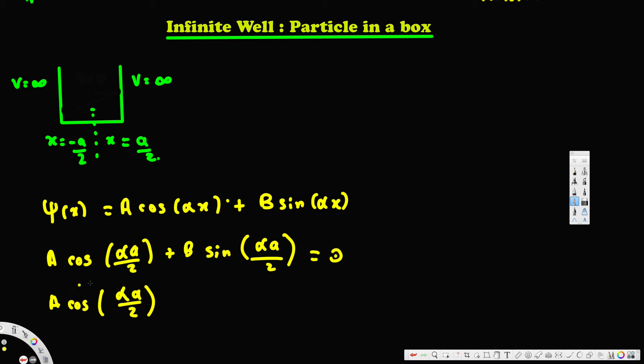So we don't have to change anything, but for sine it's different. If you put negative αa/2, that's equivalent to negative B sin(αa/2).